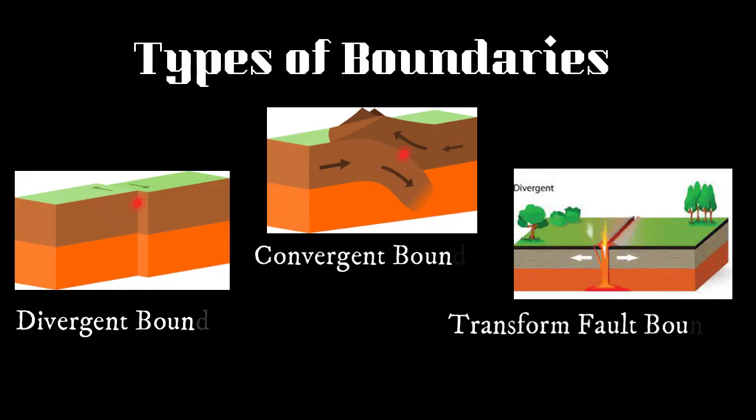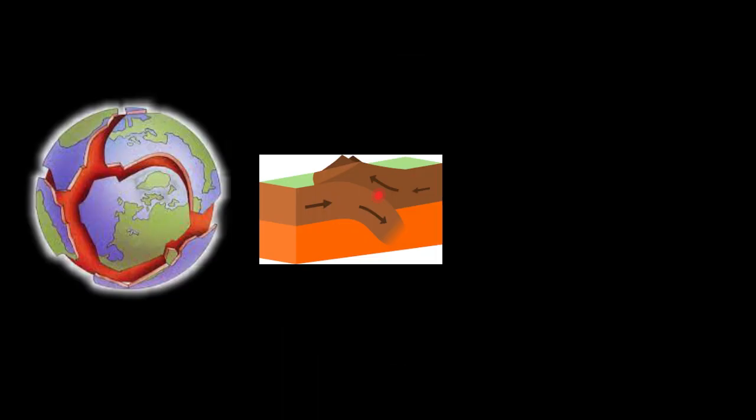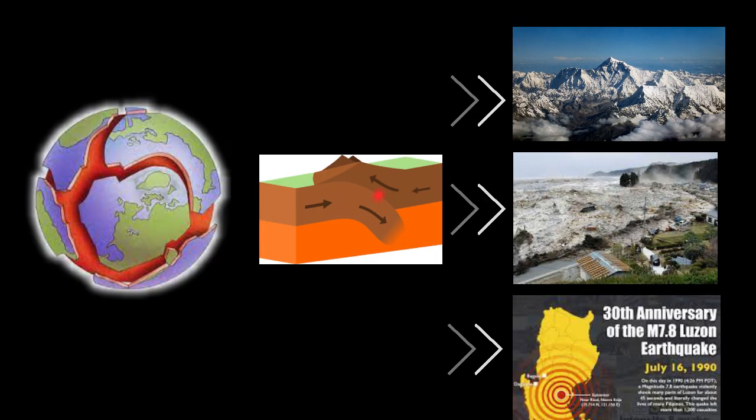Now that we have learned the types of boundaries, let us now explore the various effects of plate tectonics on Earth's lithosphere. We will be focusing on convergent boundary and its effects alongside the boundaries.